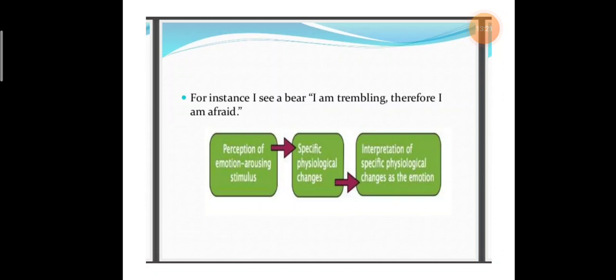For instance, I see a fear, I am trembling, therefore I am afraid. First we perceive a stimulus, then specific psychological change occurs, then interpretation of specific psychological changes as the emotions.